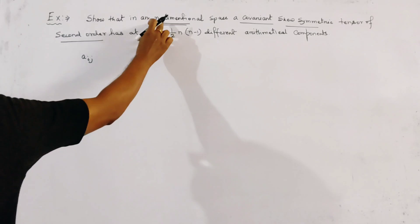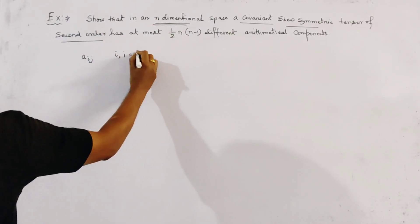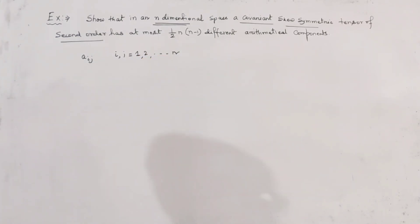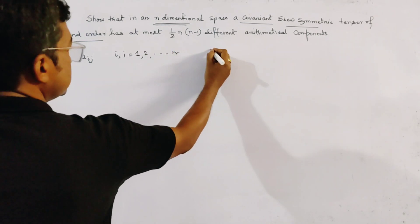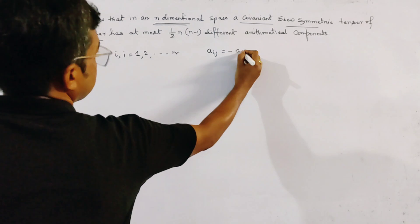Since it is in n-dimensional, so i and j run from 1, 2 to n. And since it is skew symmetric, the definition of skew symmetry is a_ij equals minus a_ji.